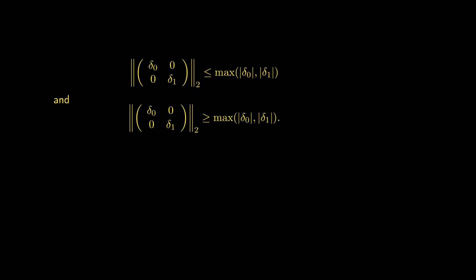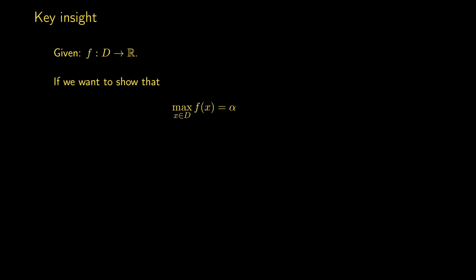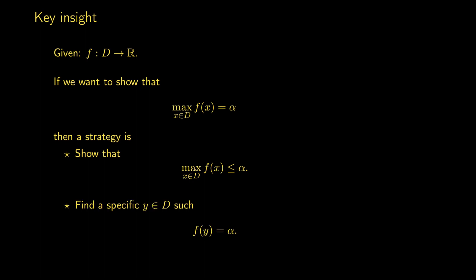Since the 2-norm is both less than or equal to and greater than or equal to the maximum of the absolute values of the diagonal elements, it must be equal to it. In the future we'll often use a slightly different proof technique: given a function from a domain D to the real numbers, to show the maximum value equals α, first show it's less than or equal to α, then find a vector y in the domain such that f(y) = α, and conclude the maximum equals α.